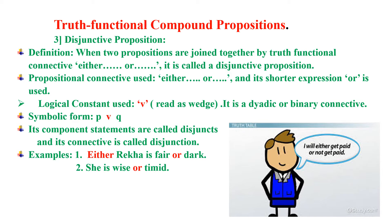Its component statements are called disjuncts and its connective is called disjunction. Example: either Rekha is fair or dark. Second, she is wise or timid. The symbolic form will be F wedge D. Second, W wedge T.